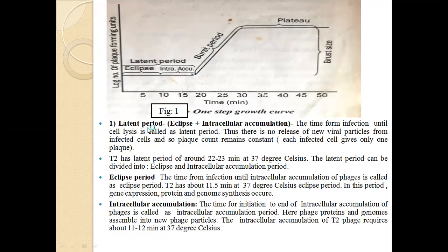The latent period includes two sub-periods: first, eclipse; and second, intracellular accumulation. The time from infection until cell lysis is called the latent period. During this time there is no release of new virus particles from infected cells, so the plaque count remains constant. Each infected cell gives only one plaque — meaning a single virus infected a single bacterial cell. T2 phage has a latent period of around 22 to 23 minutes at 37°C.